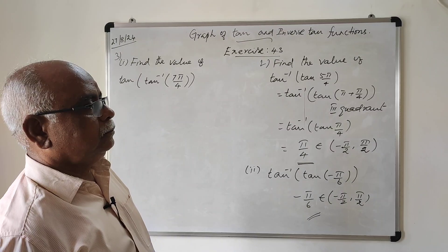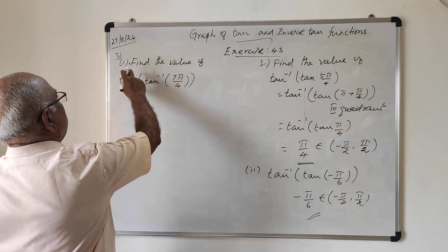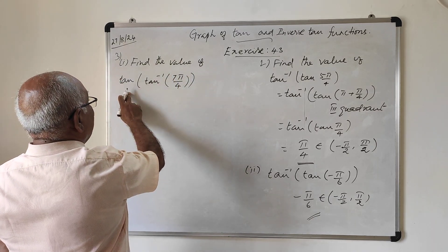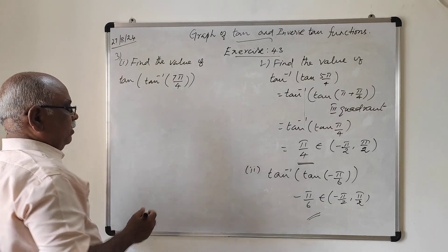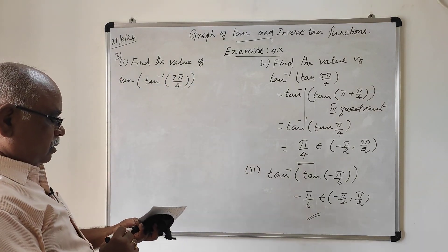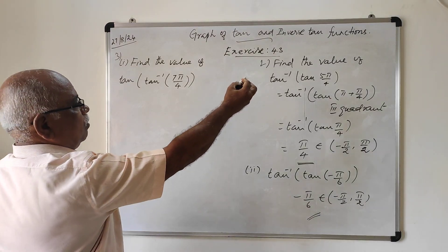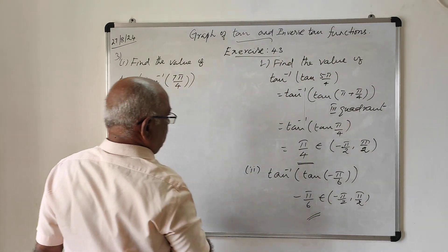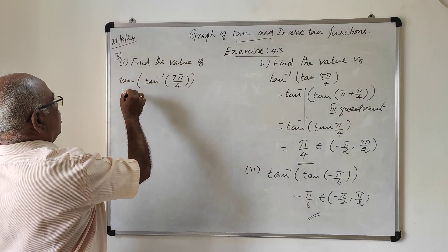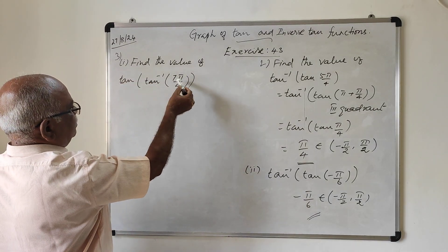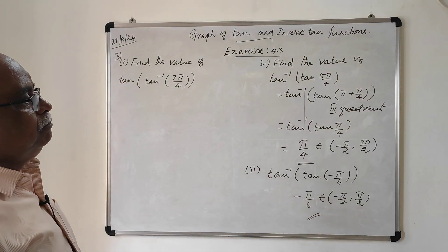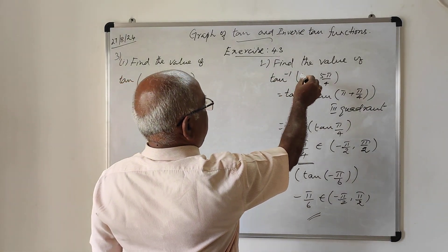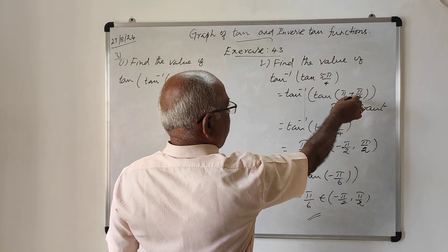Next, find the value of tan(tan⁻¹(7π/4)). Notice the difference between these problems: the previous problem was tan⁻¹(tan(5π/4)), whereas this problem is tan(tan⁻¹(7π/4)). Here, since tan inverse and tan are reciprocal, we get 7π/4.